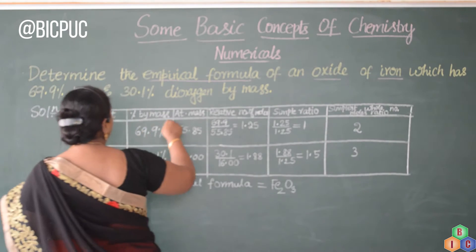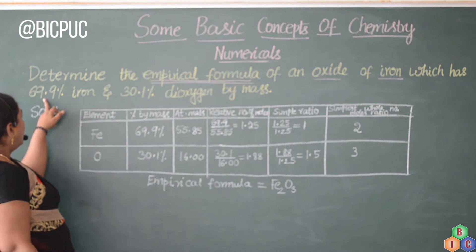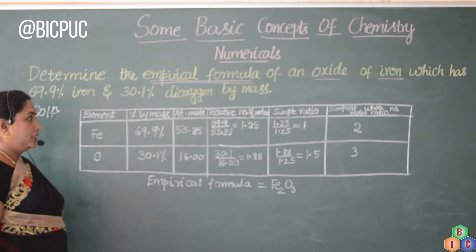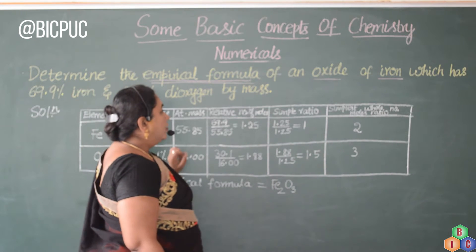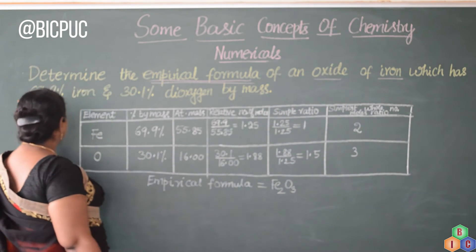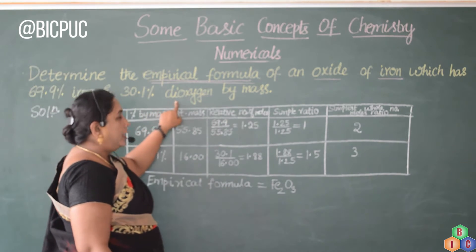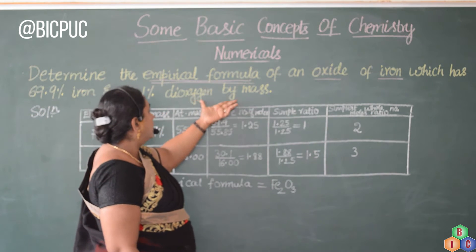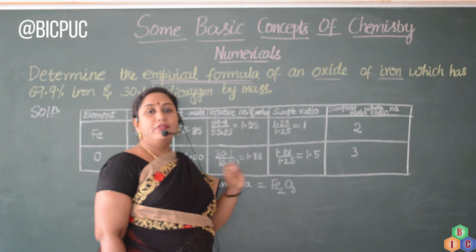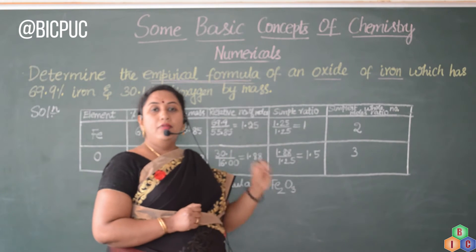Determine the empirical formula of an oxide of iron which has 69.9% iron and 30.1% di-oxygen by mass. The data given is an oxide of iron containing 69.9% iron and 30.1% di-oxygen by mass. With this data, we need to calculate the empirical formula.